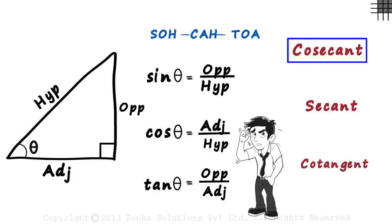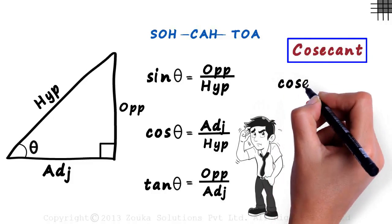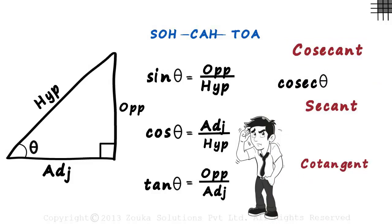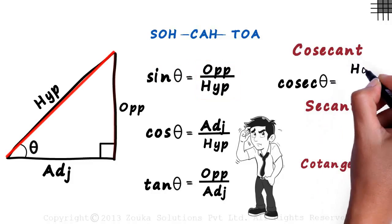Anyway, the cosecant of theta is written as cosec theta. Sometimes it's also written as CSC theta, but we will be using cosec in our videos. The formula is simple. It's the reciprocal of sine theta. Sine theta is opposite by hypotenuse. Cosec theta is hypotenuse by opposite.